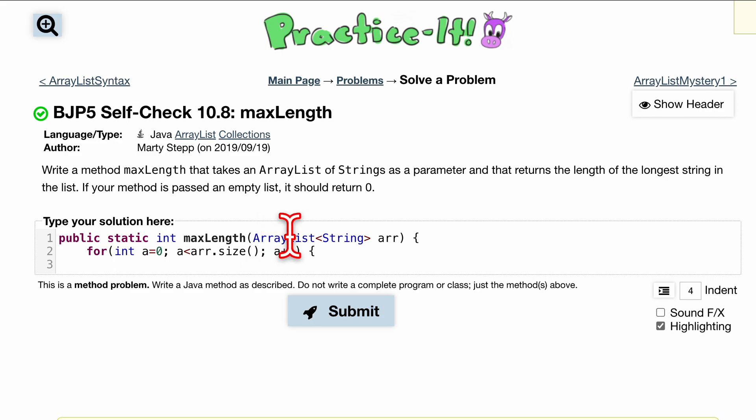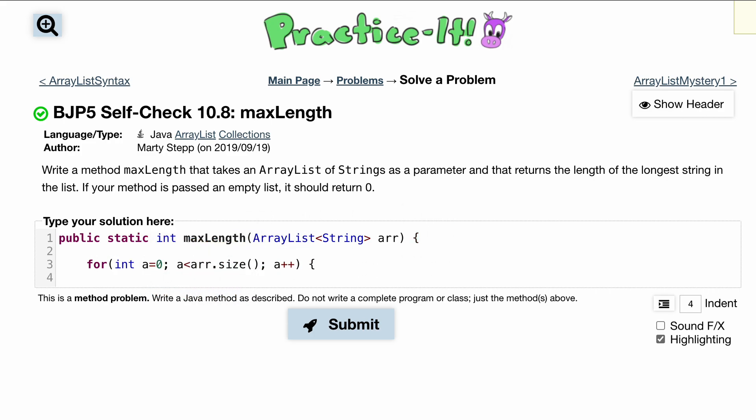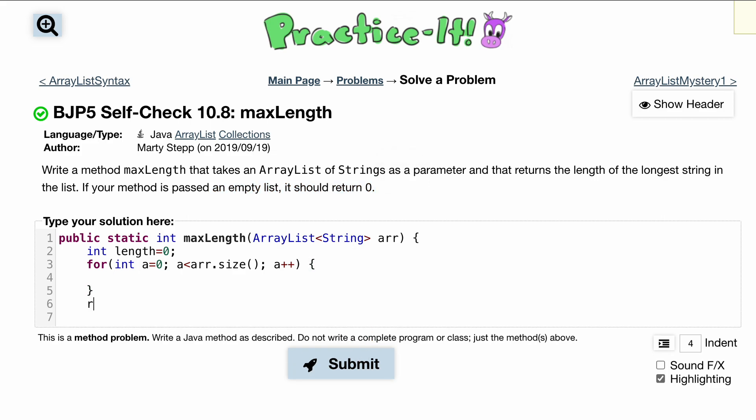Now, what we want to do is check to see if our next value is higher than our previous value. So let's actually start this off and make a variable that we can return. Int length is equal to zero initially, and that is going to take care of this, because if we don't have anything in this for loop, we'll just return our length, which is zero.